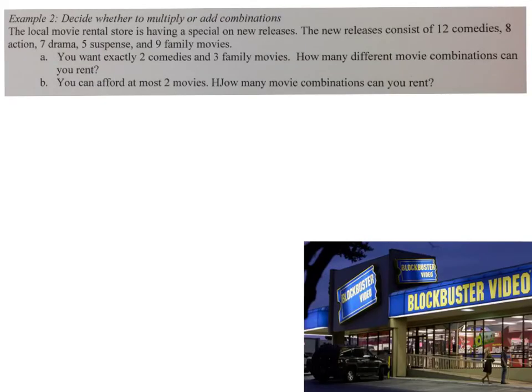Here's a real blast from the past. Does anybody remember this place, Blockbuster Video, where we used to go get our movies before we had Netflix and Amazon? This problem was written back in those days. The local movie rental store is having a special on new releases. The new releases consist of 12 comedies, 8 action, 7 drama, 5 suspense, and 9 family movies. Part A: you want exactly 2 comedies and 3 family movies. How many different movie combinations could you rent? Part B: you can afford at most 2 movies. How many movie combinations can you rent?